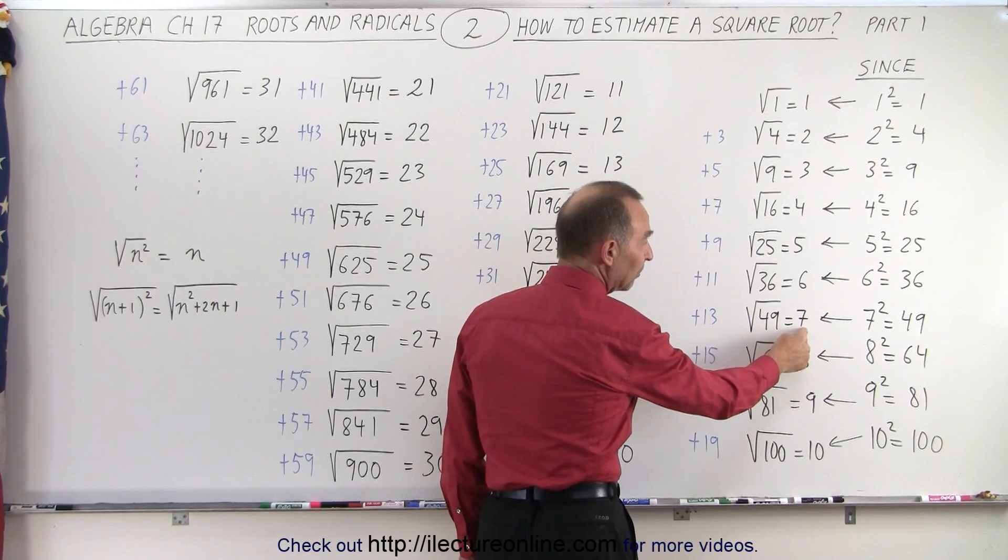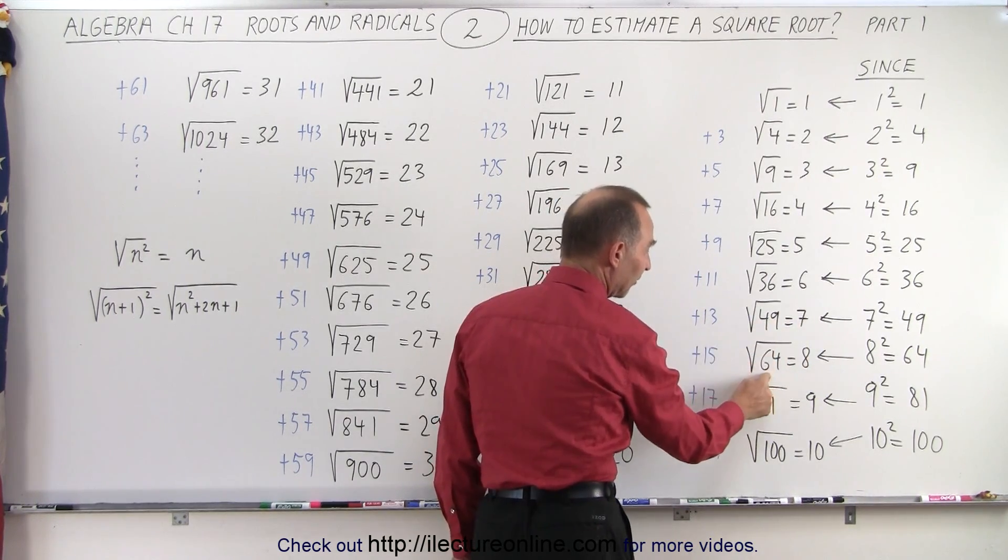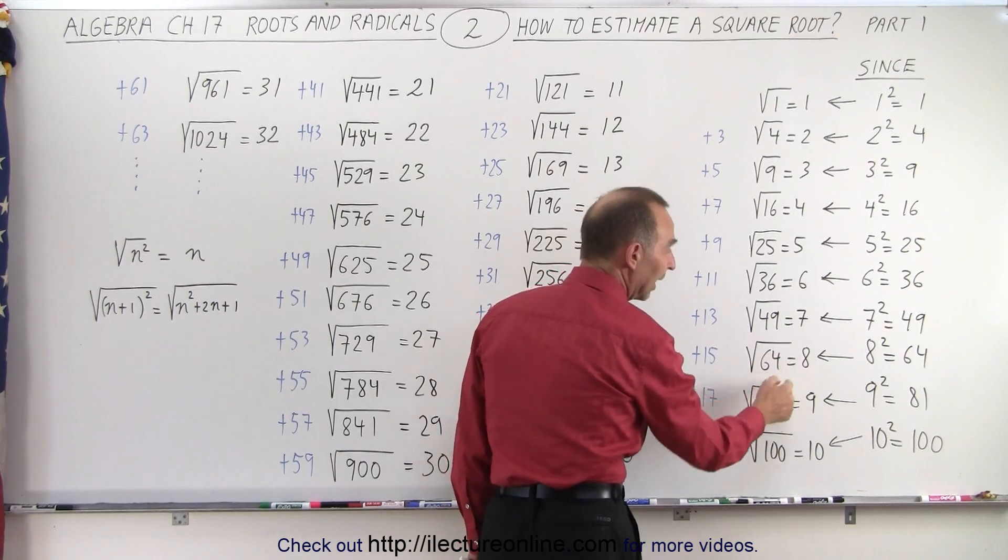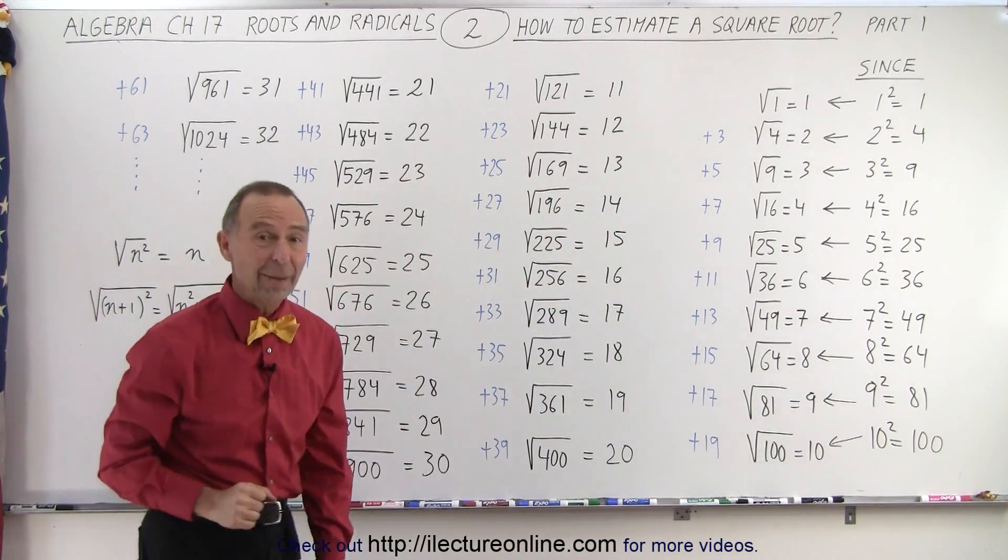Double 7, we get 14 plus 1 is 15. Add 15 to that, we get 64. The square root of 64 is equal to 8, and so forth, which is a really interesting pattern.